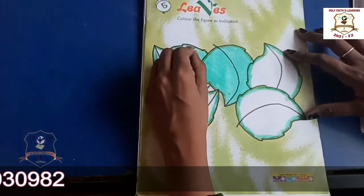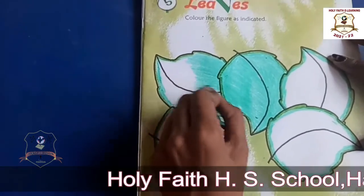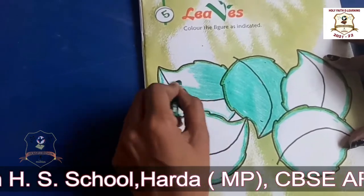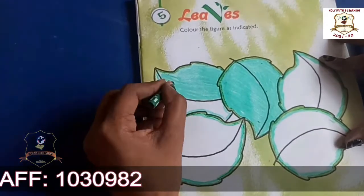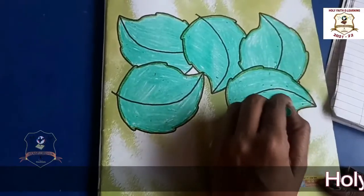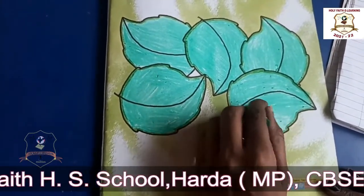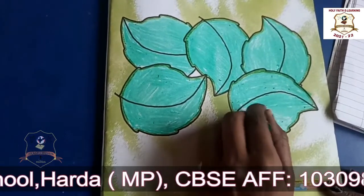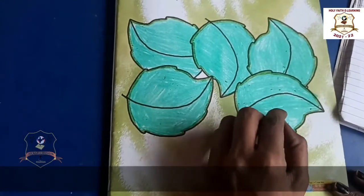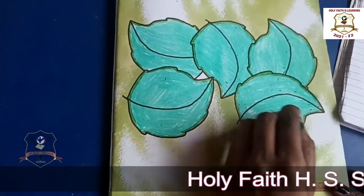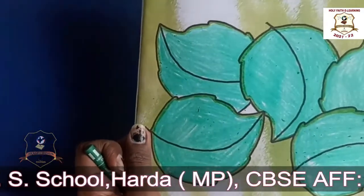From the outline we will fill the color here and here and here. Okay students, look at here — looks so beautiful. Now our coloring is complete. Look at here. Beautiful.